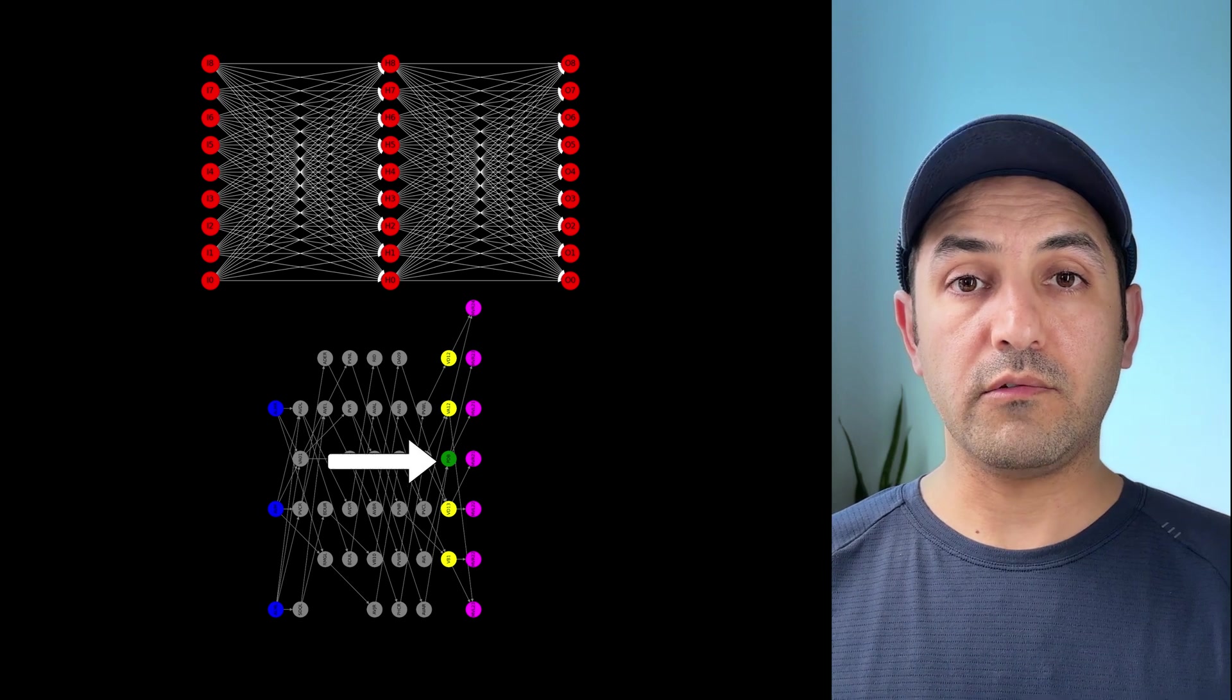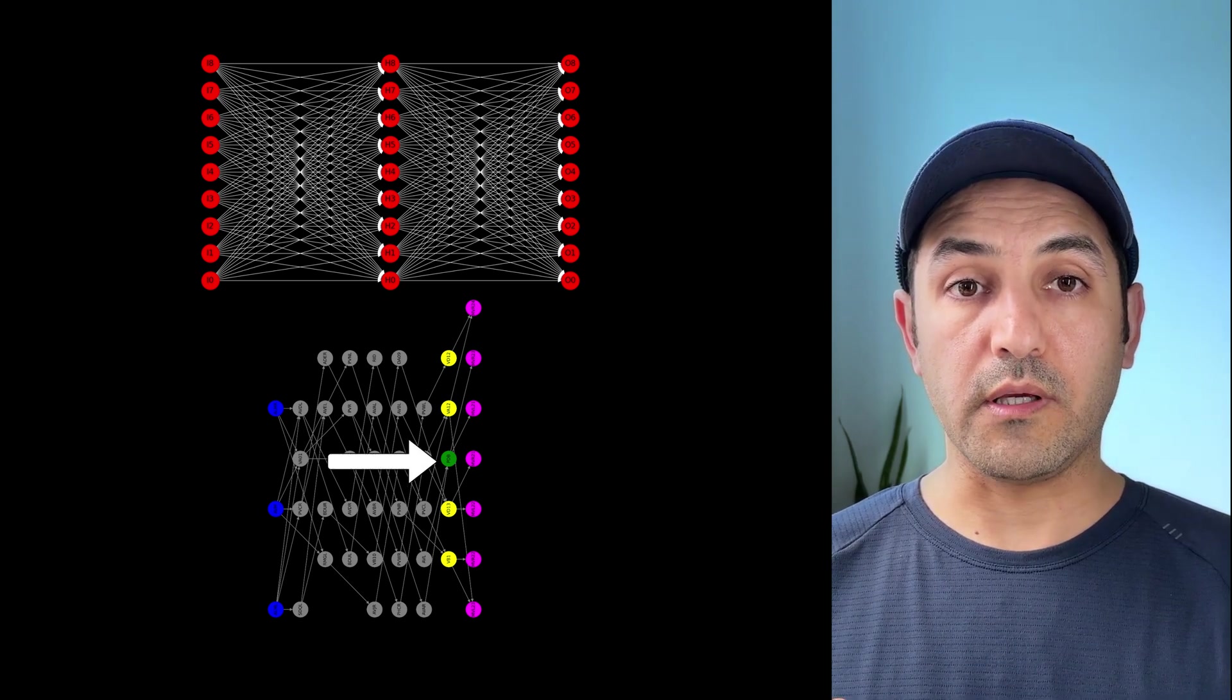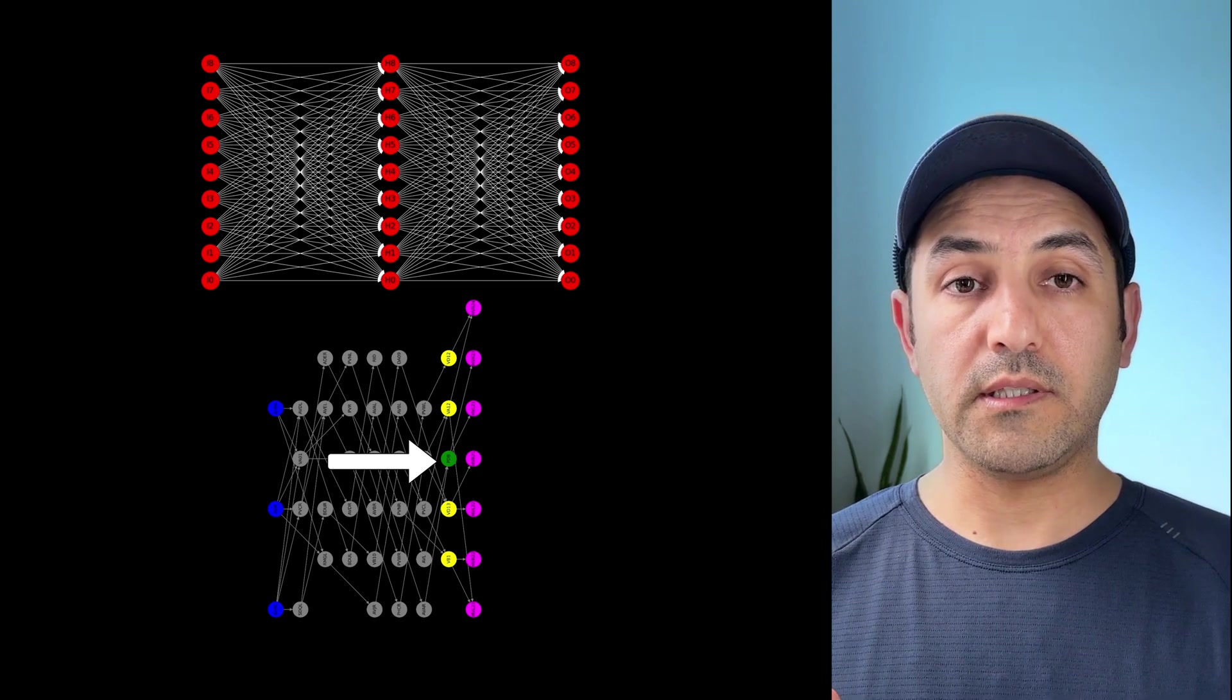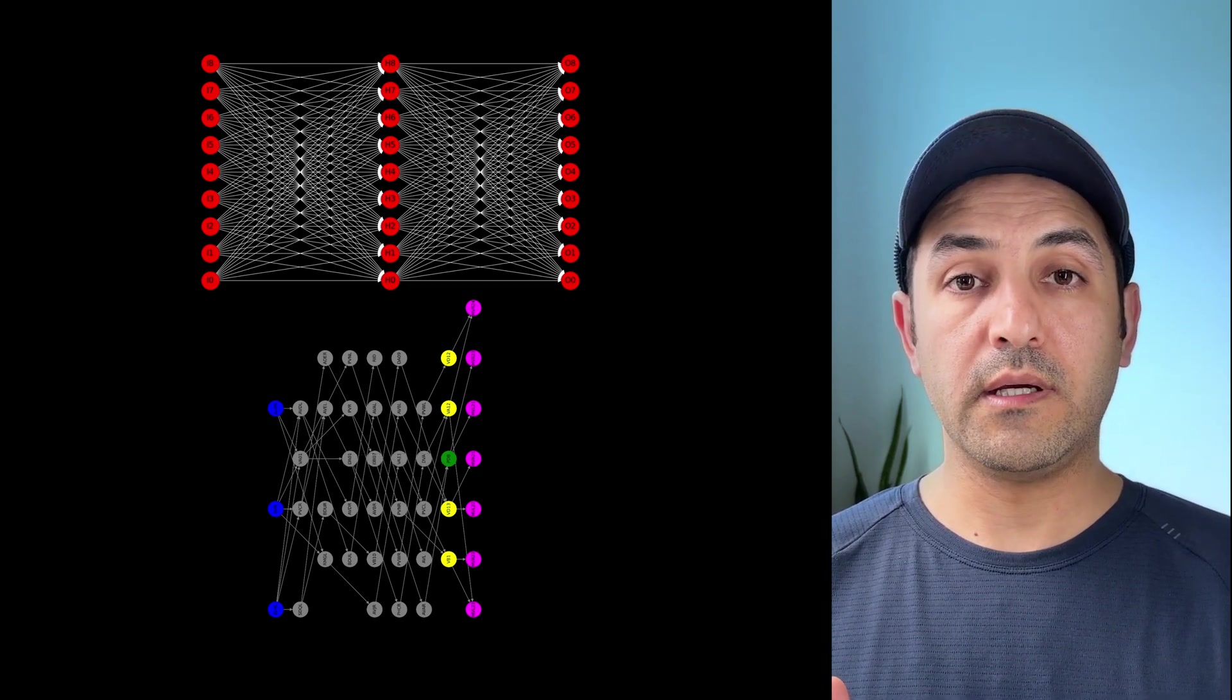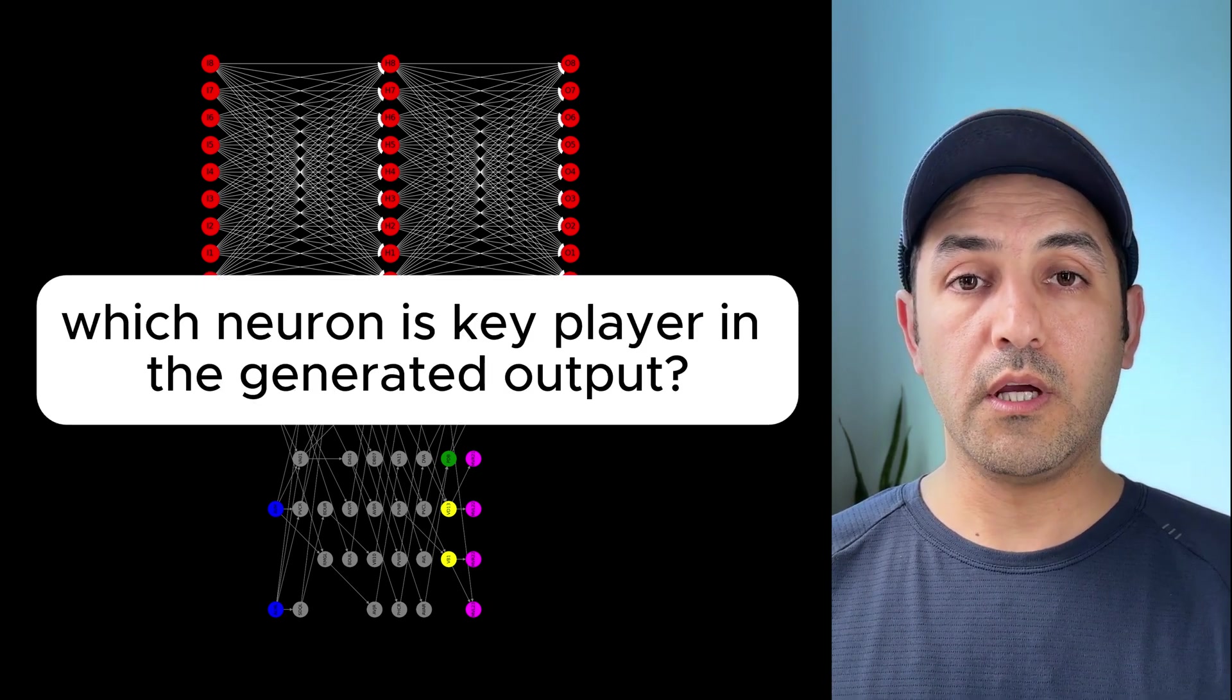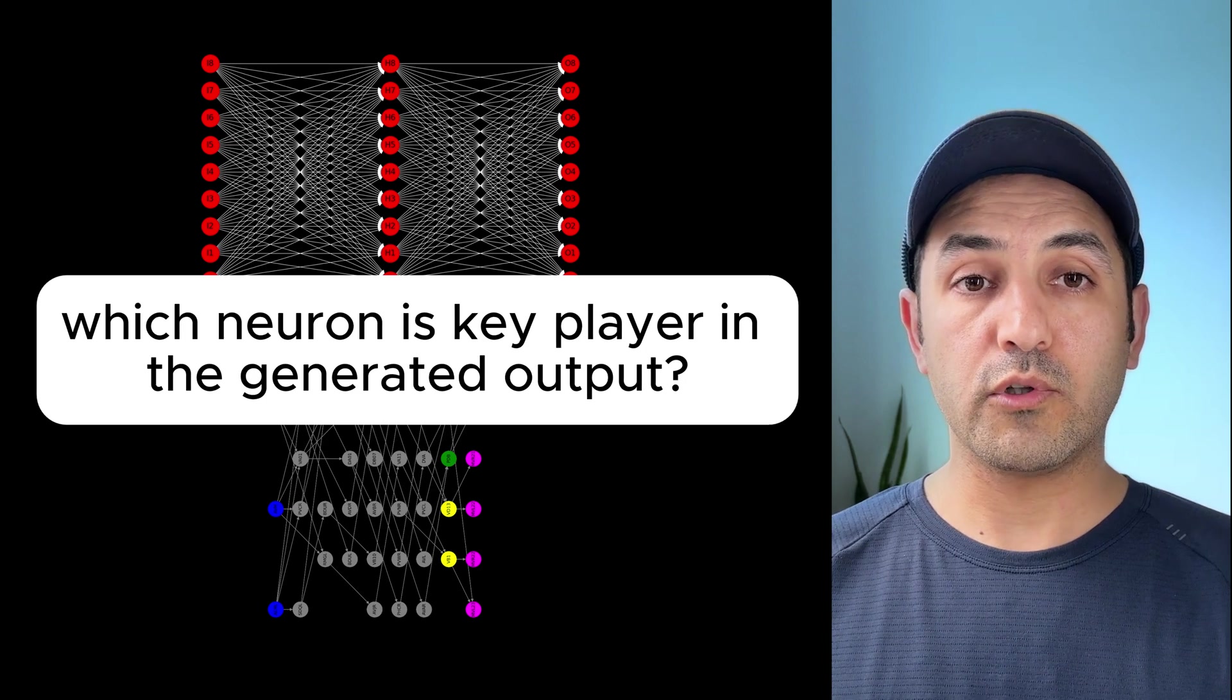Similar to C elegans, we can use control theory to find the important neurons in an artificial neural net that is the key player in a certain task. This, in my opinion, will open a door to a new avenue of research to uncover how neural networks arrive at a certain result.